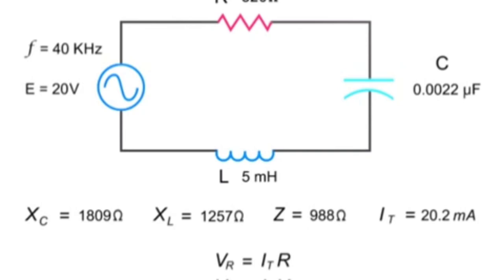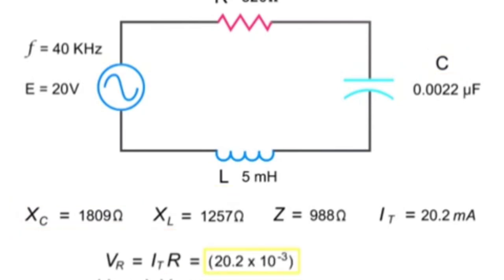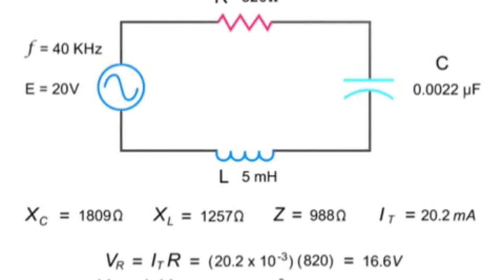To determine the voltage across each component, multiply the total current of 20.2 milliamps by the resistance at each component. For the resistor, it would be 20.2 milliamps times 820 ohms, or 16.6 volts. For the capacitor, 20.2 milliamps times 1,809 ohms, or 36.6 volts. And the inductor voltage would be 20.2 milliamps times 1,257 ohms, or 25.4 volts.